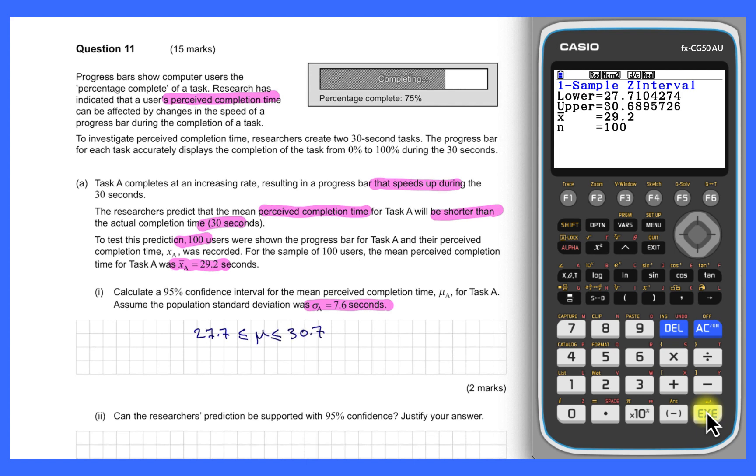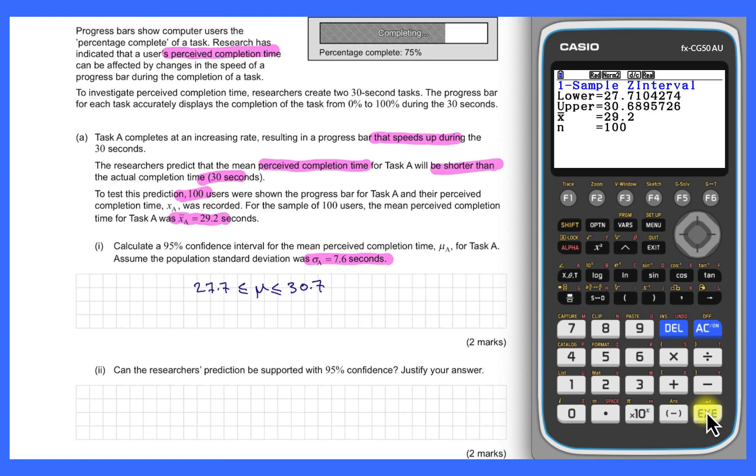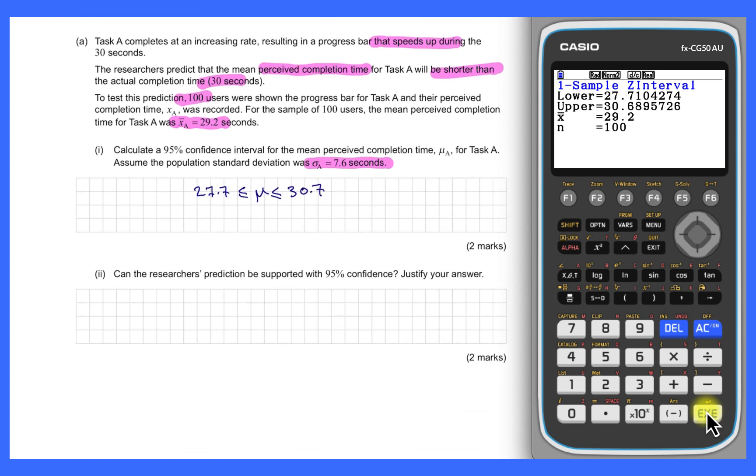With an interval like this, we're now asked to say, can the researcher's prediction be supported with 95% confidence? Recalling that their prediction was that it would be perceived to be shorter than the actual completion time, which was 30. This interval doesn't allow us to conclude that, because if it was true that the mean perception time was less than 30, that whole interval should lie below 30. As it is, some of the interval is below 30, but some is above and some is 30. So we can't conclude their result, so I'm going to phrase that in the following way.